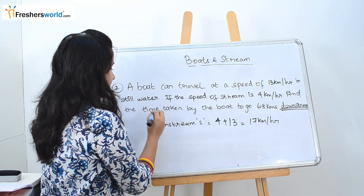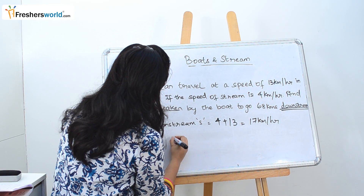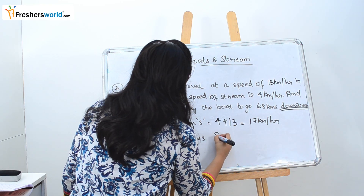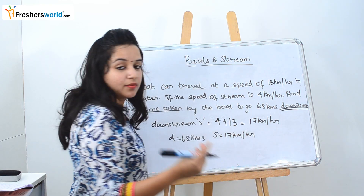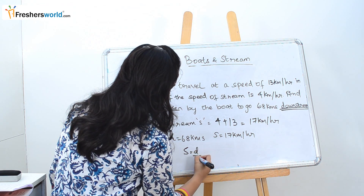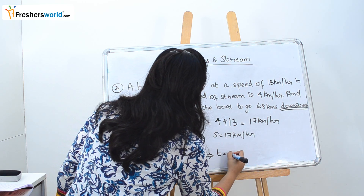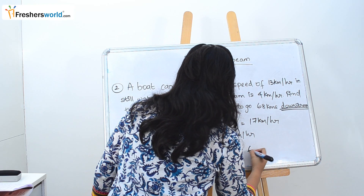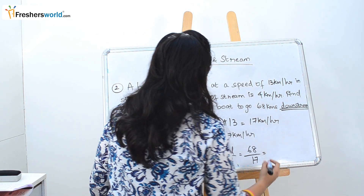The question asks us to find the time taken by the boat to go 68 kilometers downstream. Distance is 68 kilometers and speed is 17 kilometers per hour. Using the formula speed equals distance divided by time, time equals distance divided by speed: 68 divided by 17 equals 4 hours.